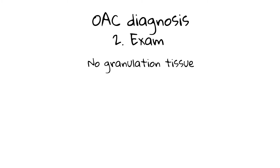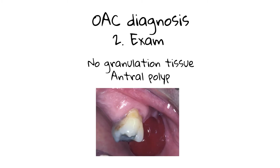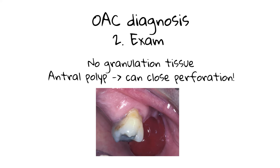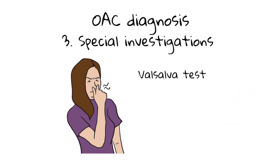On examination, there will be no granulation tissue visible in the socket. At a later stage, there may be formation of an antral polyp, which is visible as a bluish-red lump through the defect intraorally. The perforation can be closed by the polyp, in which case the patient won't present with all the typical symptoms mentioned above.